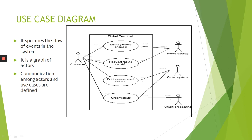For example, consider the ticket terminal. If you are going to a movie theater and booking a ticket, the customer can ask for display movie choices, request movie details, print pre-order tickets and order tickets. Display movie and request movie data will be handled by the movie catalog. The order system handles the ordering process, and order tickets are handled by credit processing. This representation is called the use case diagram.